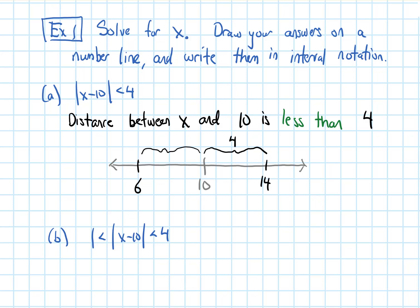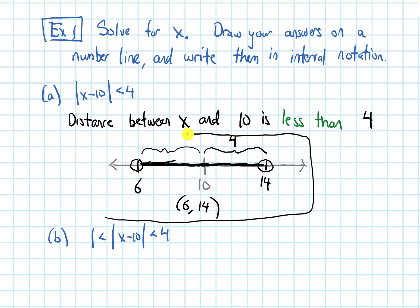Shading in the places where x can be: x can be right at 10 because the distance is 0. As I increase the distance, once I get to 14 the distance is 4, but the problem says the distance has to be less than 4, so I put an open circle at 14. Going in the other direction, I cannot be exactly at 6 either, so there's an open circle at 6. In interval notation, the answer is (6, 14) with parentheses because those endpoints are not included.